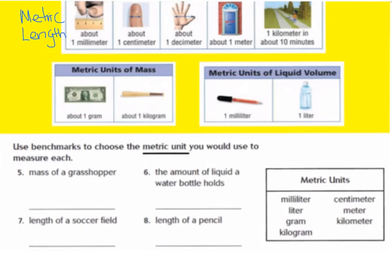Now we're going to use the benchmarks to choose the metric unit. For the mass of a grasshopper — well, a grasshopper is very light, so we would probably use grams. For number six, the amount of liquid a water bottle holds, we would probably use a liter to measure how much water a water bottle holds.